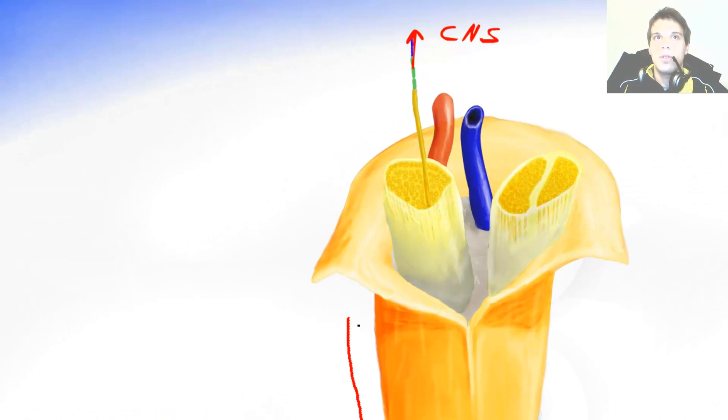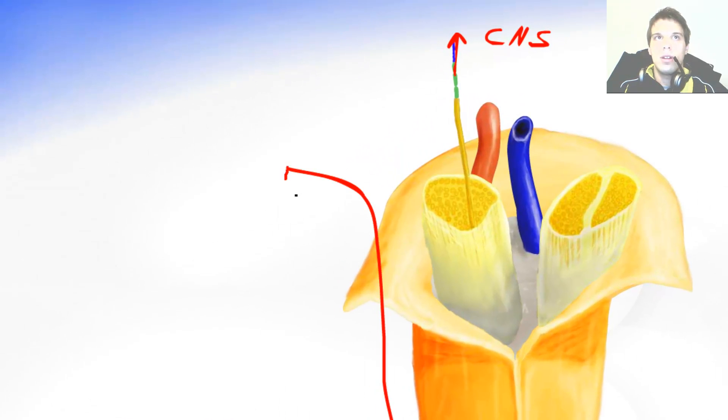One of those are the Meissner corpuscles. They are created out of layers of cells. They are approximately one millimeter long and they are to be found right beneath the skin.